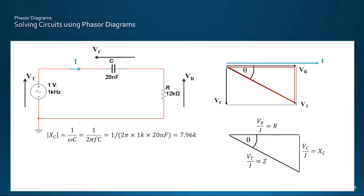Also, since the current is common throughout, we can divide each vector by it. So that Vr divided by I is the resistance R, Vc divided by I is the capacitive reactants Xc, and Vt divided by I is the total impedance Z of the capacitor and resistor together.